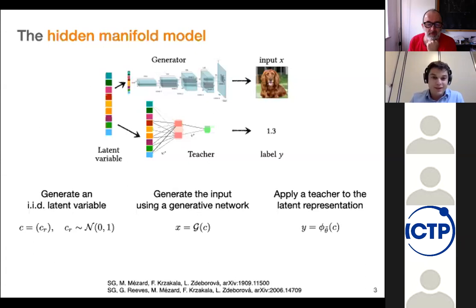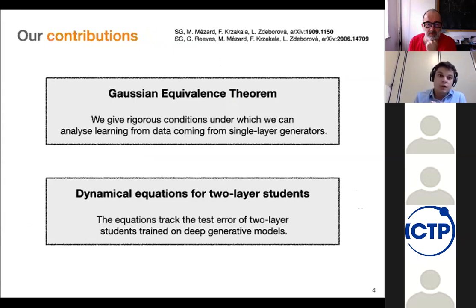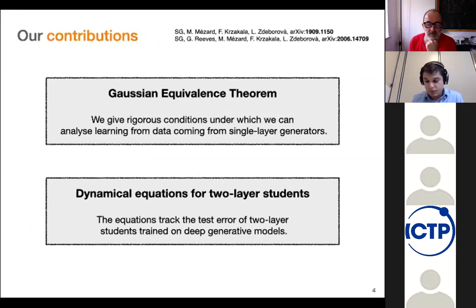The quick answer is yes, we can. Particularly, I'm going to talk about two contributions. One is the Gaussian equivalence theorem, where we give rigorous conditions on the weights of a single-layer generator such that we can do an analysis. The second contribution is where we derive dynamical equations that tell you how the student evolves in time — in particular, how its test accuracy evolves when it's trained on data coming from this model. For the rest of the talk, I just want to take you through these two points.